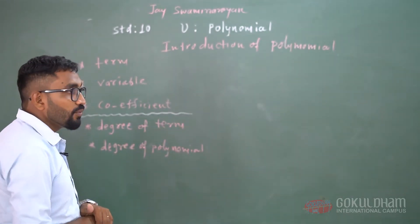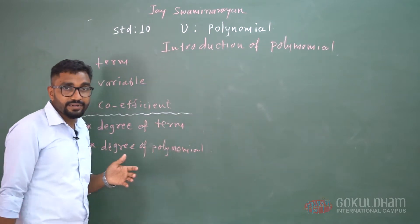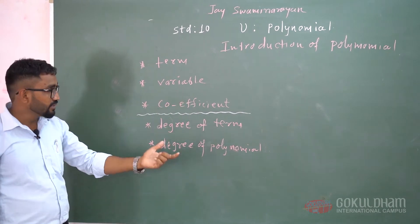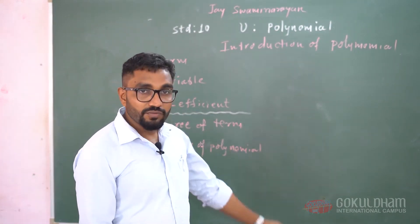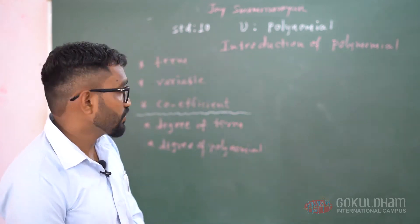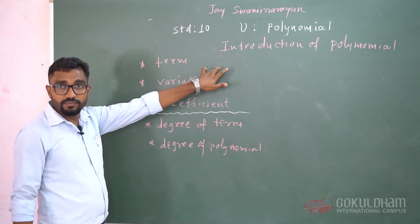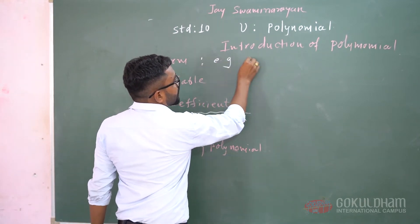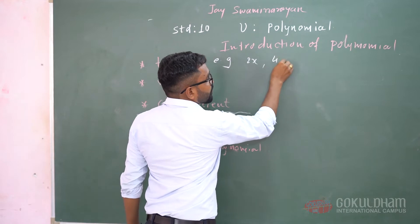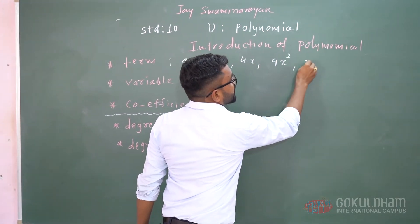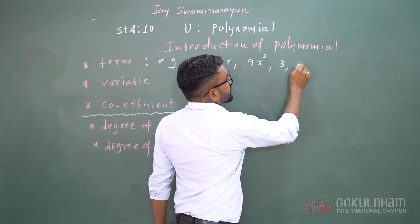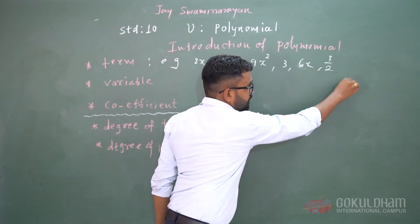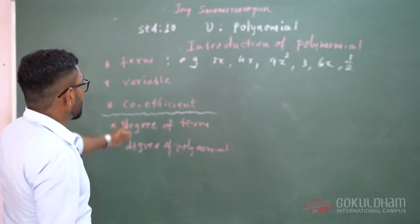In the introduction of polynomials, we discuss many words like terms, variable, coefficient, degree of terms and degree of polynomials. Term means, suppose 2x, 4x, 9x square, 3, 6x, or 3 by 2, etc. are terms.